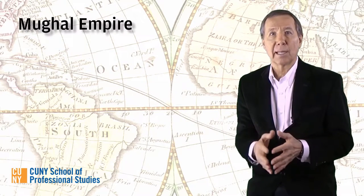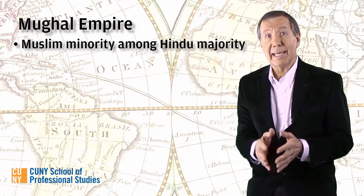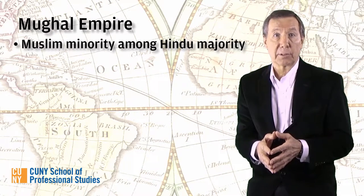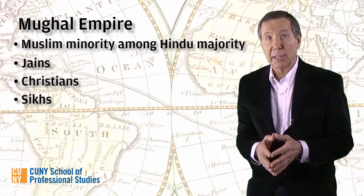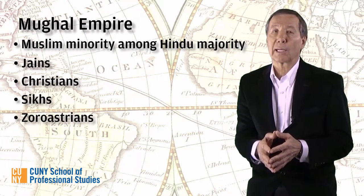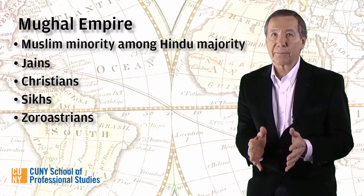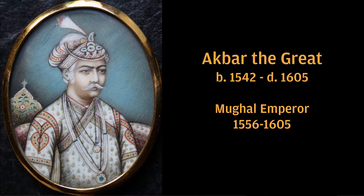In the Mughal Empire, Muslims were a minority in a predominantly Hindu society, which featured other religious communities such as the Jains, Christians, Sikhs, and a small number of Zoroastrians. The diversity of religious practices in the Mughal Empire reached its height under Akbar the Great, who fostered tolerance for religious heterogeneity and encouraged the exchange of theological ideas.